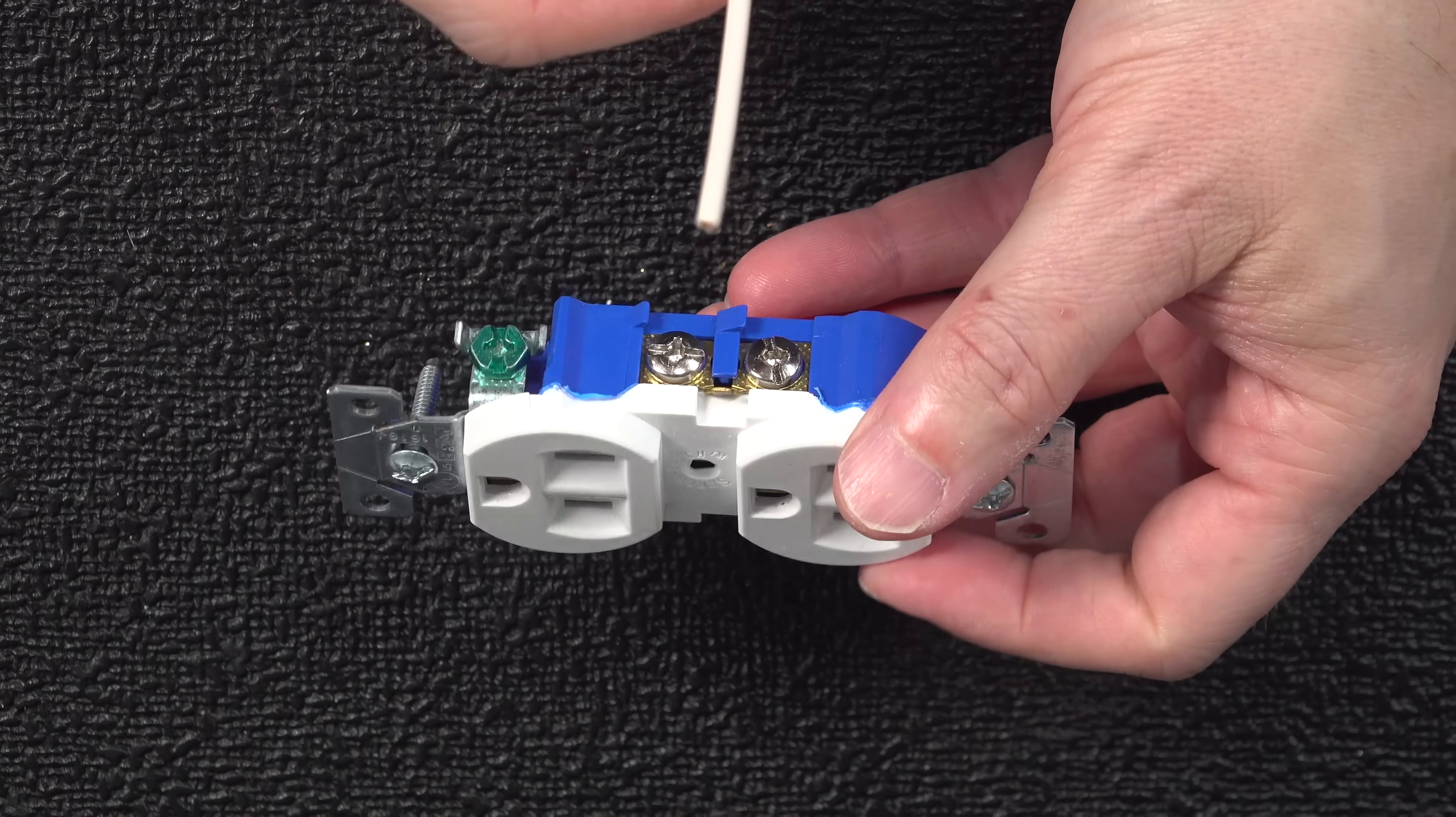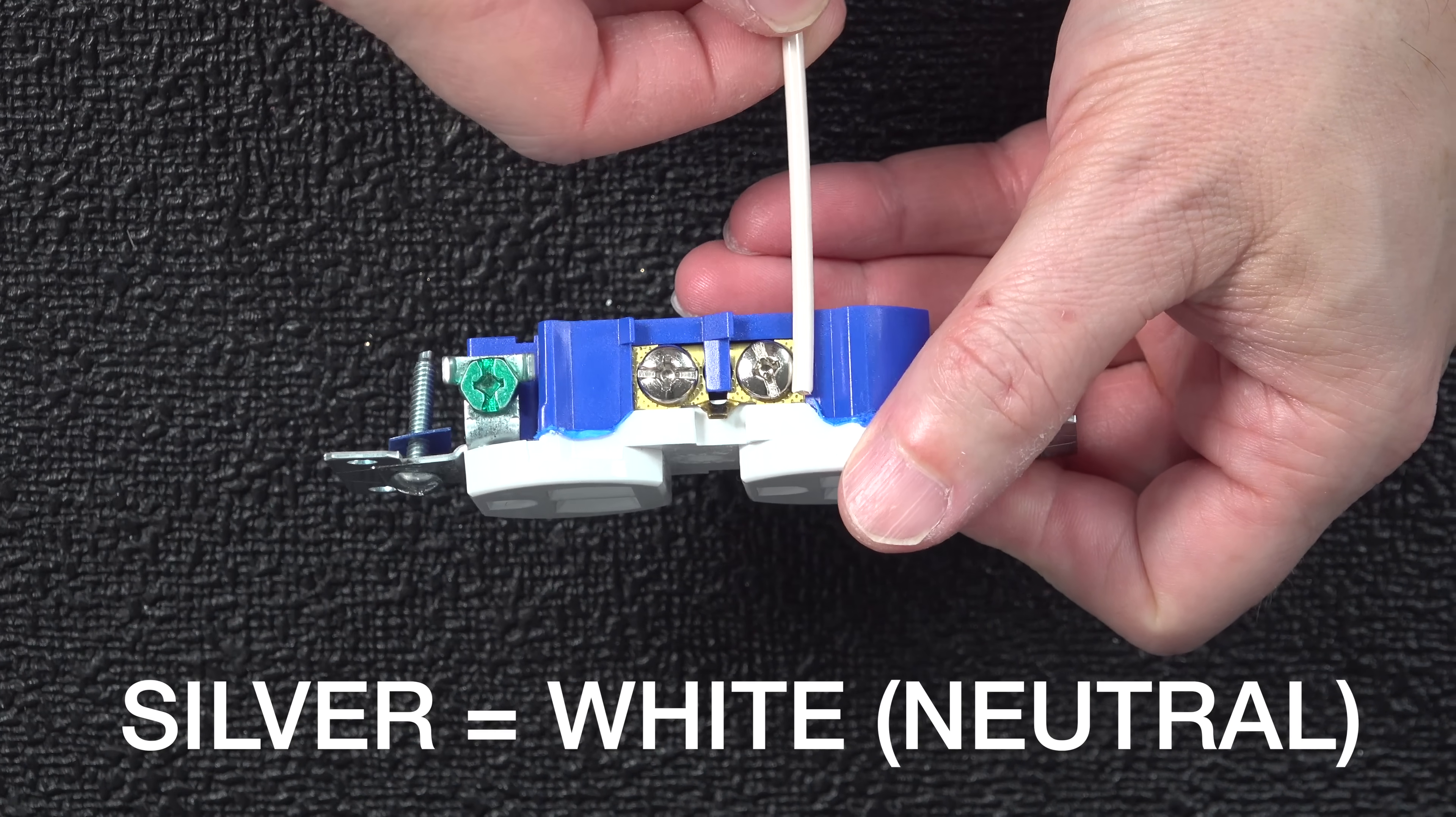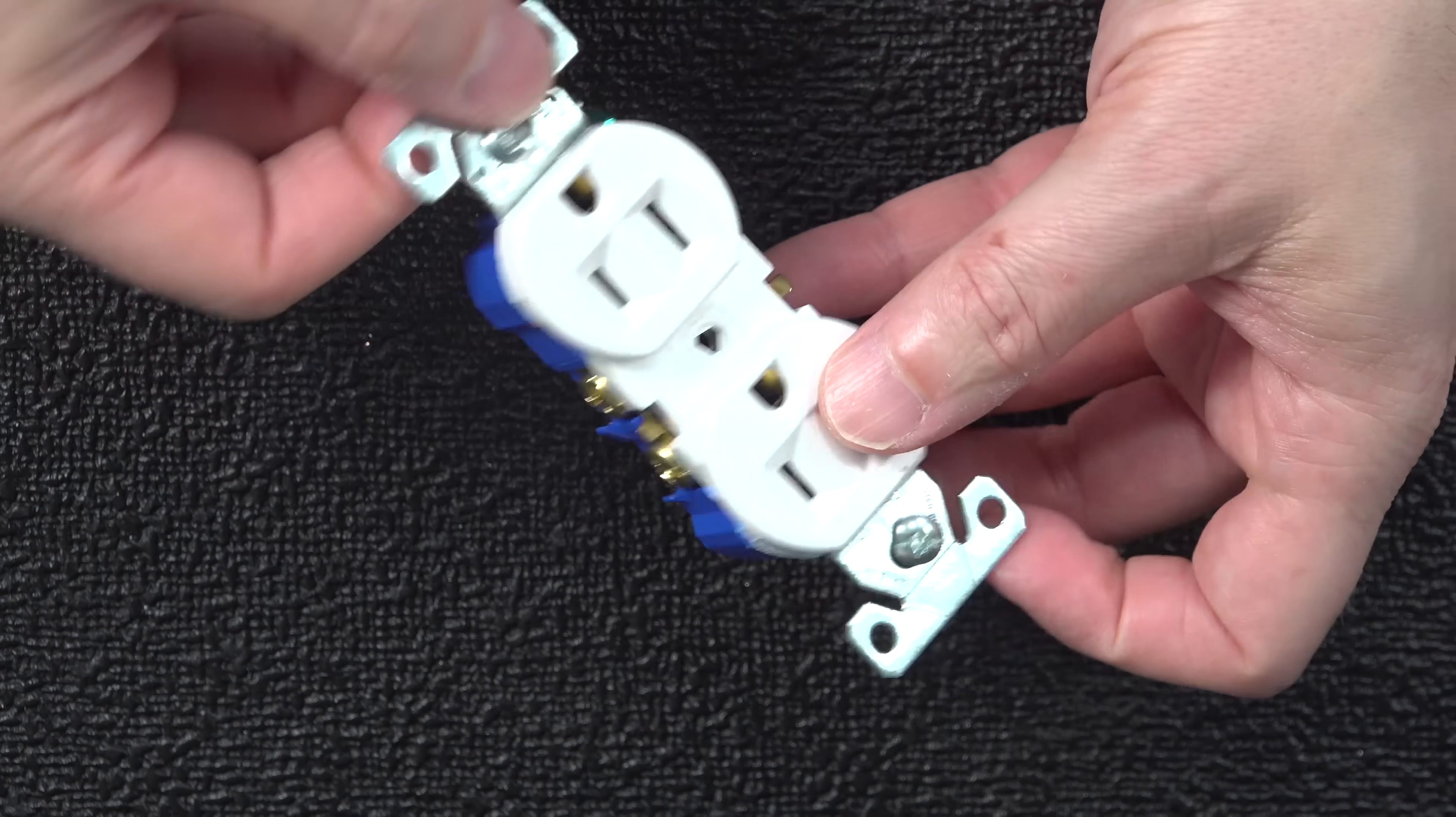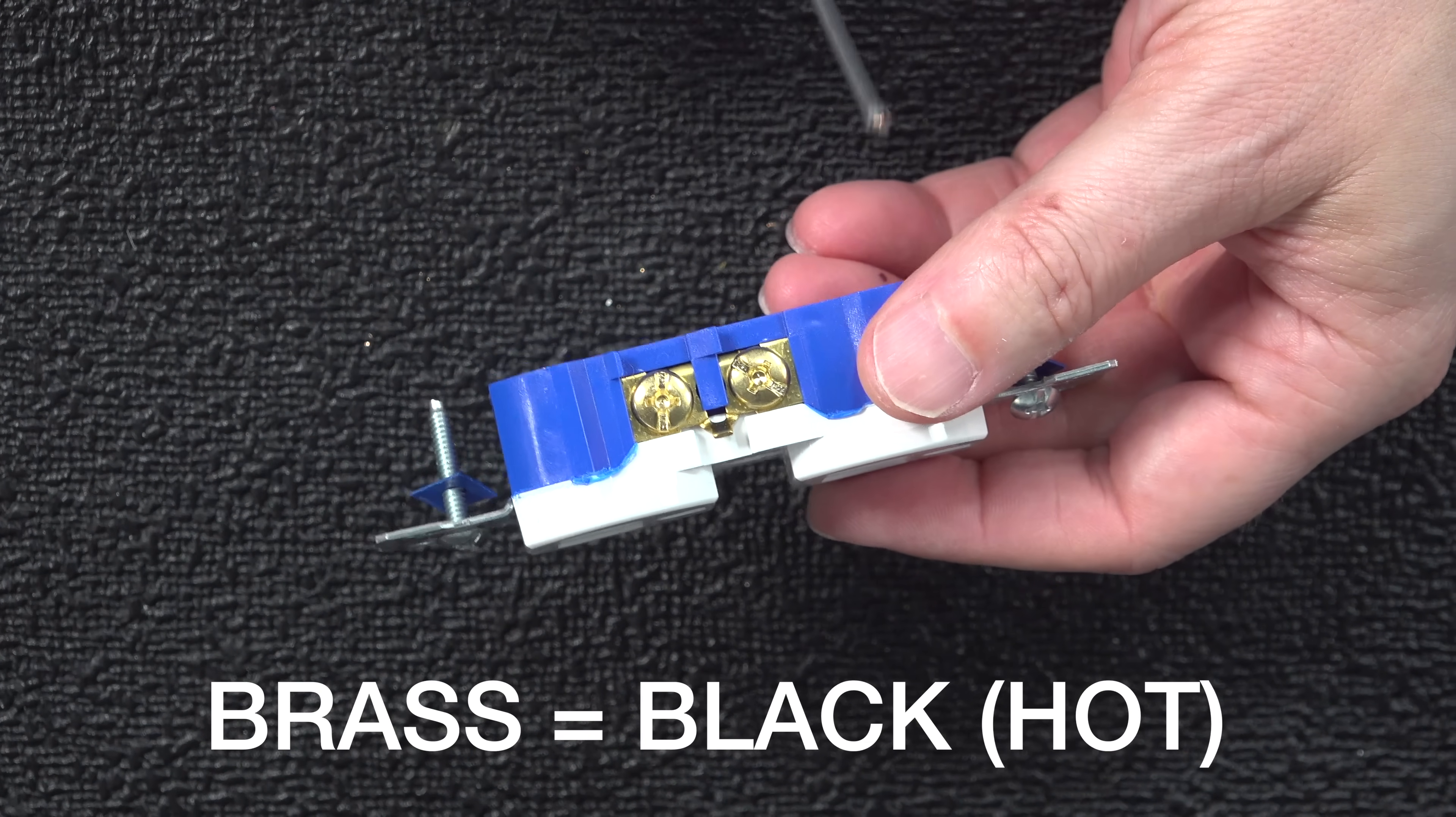You want to remember that those silver screws will always be connected to the white wire, which is also called your neutral wire. And those brass or gold screws, they're going to always be connected to the black wire, which is also called your hot.